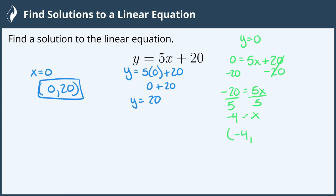This ordered pair is (negative 4, 0), and here's another solution to this equation. Again, we can put in any number for x or y, solve for the other variable, and we have another solution.